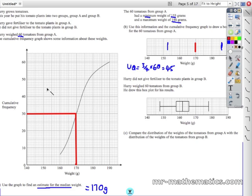So like we did for the median we will go across at 45 to the curve and down to our x-axis so the upper quartile is at 175.